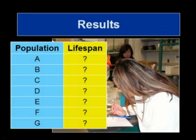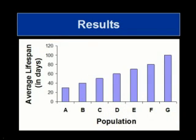Here's an example of what our graph will look like if we were right about our hypothesis. We would expect the populations with the shortest generation times, such as population A, to also live the shortest, and the populations with the longest generation times, such as population G, to live the longest.